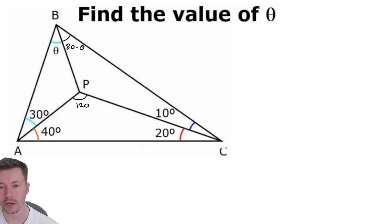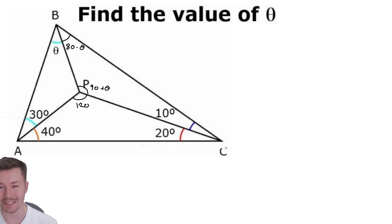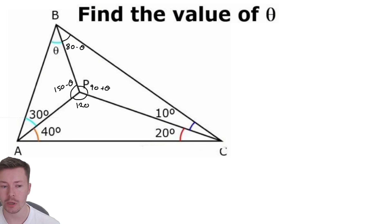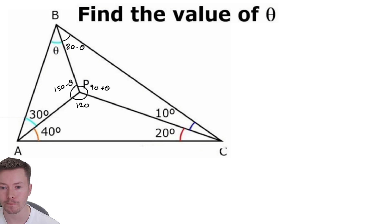The next thing to work out is that this angle is 90 plus theta, because again there are 180 degrees in a triangle. Looking at triangle BPC, APB must be 150 minus theta for the same reason.